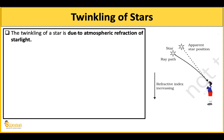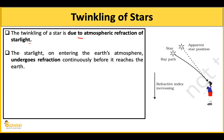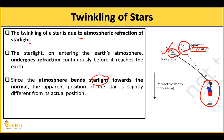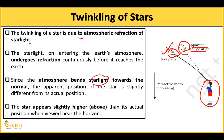The twinkling of stars is due to atmospheric refraction of starlight. When starlight enters Earth's atmosphere, it undergoes continuous refraction. Before it reaches your eyes, it refracts many times. Because of this refraction, the atmosphere bends the star's light towards the normal. So the star's apparent position is slightly higher than its actual position — you see the star here but it is actually there.